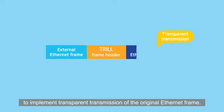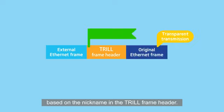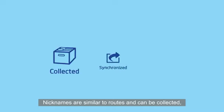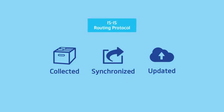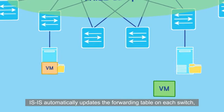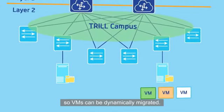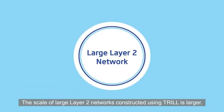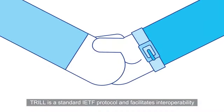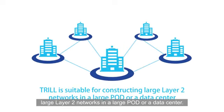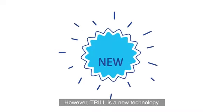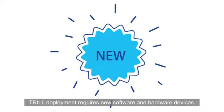Take TRILL as an example. It adds a TRILL frame header to an Ethernet frame and encapsulates it in a new external Ethernet frame to implement transparent transmission. TRILL-enabled switches forward frames based on the nickname in the TRILL frame header. Nicknames are similar to routes and can be collected, synchronised and updated using IS-IS. When VMs are migrated on a TRILL network, IS-IS automatically updates the forwarding table on each switch, ensuring IP addresses and other states of the VMs remain unchanged so VMs can be dynamically migrated. TRILL is a standard IETF protocol and facilitates interoperability between devices from different vendors. It is suitable for large PODs or data centres. However, TRILL is a new technology requiring new software and hardware devices, making investment costs high.